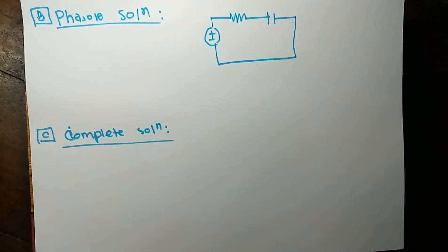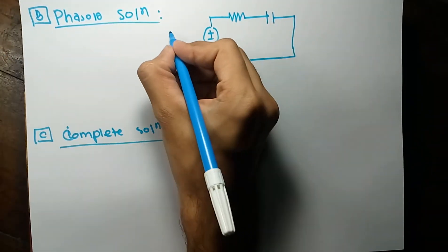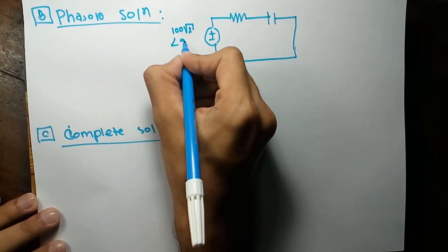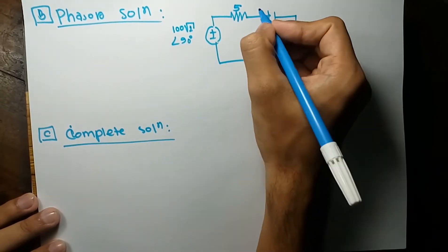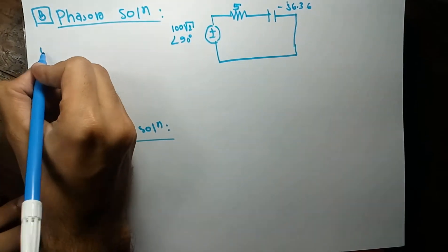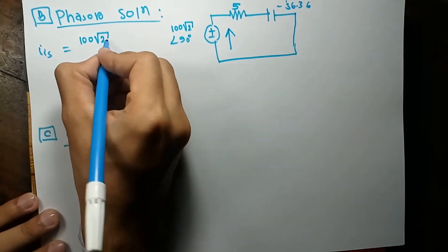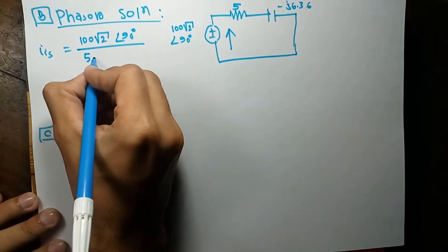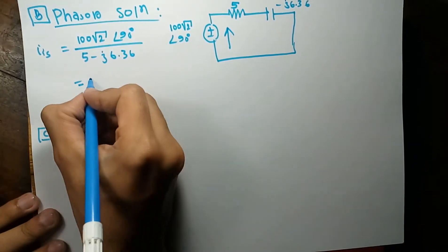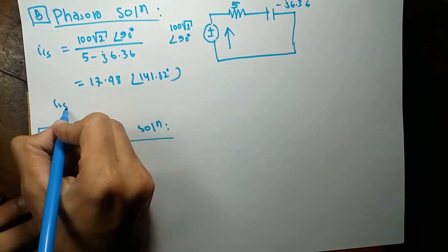The shorted resistance is removed from the circuit. Converting to the time domain, the voltage source is 100√2 at an angle of 90 degrees. The resistance is 5 ohms, and the capacitor impedance in the frequency domain is −j6.36 ohms. The steady-state current is 100√2 ∠90° divided by (5 − j6.36).